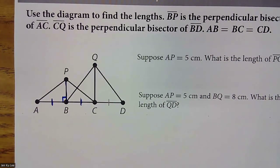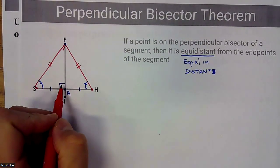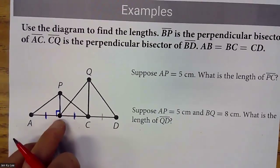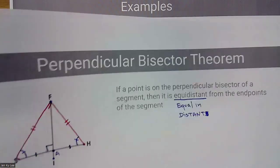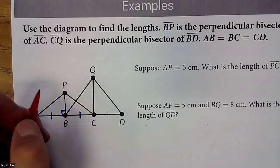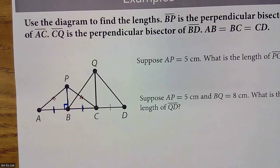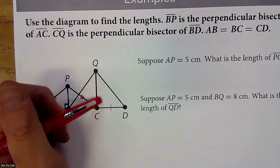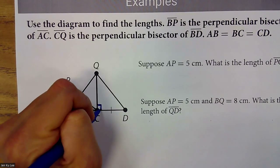All of the marked angles are right angles. Based off the perpendicular bisector theorem, BP is the perpendicular bisector of AC. So which segments are equal in distance? PA is congruent to PC. And this other perpendicular bisector of BD means those segments are congruent — they have the same tick marks. Since it has one tick mark, this segment will also have one tick mark.